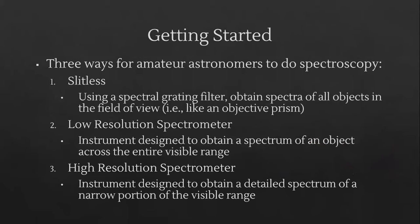There are primarily three ways for amateur astronomers to get started in spectroscopy. The first is what we call slitless — this type uses a spectral grating filter to produce spectra of all the stars in the field of view, much like the objective prisms used in the early days of astronomical spectroscopy. Next is a low-resolution spectrometer, an instrument that obtains a spectrum of a single object across the entire visible spectrum. Then there's the high-resolution spectrometer, providing a detailed spectrum over a narrow range of wavelengths.